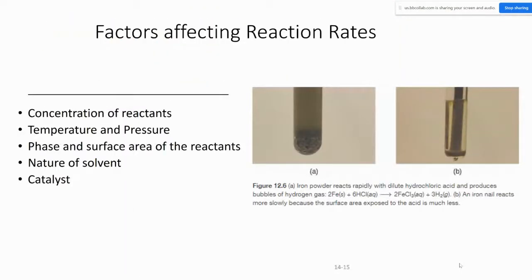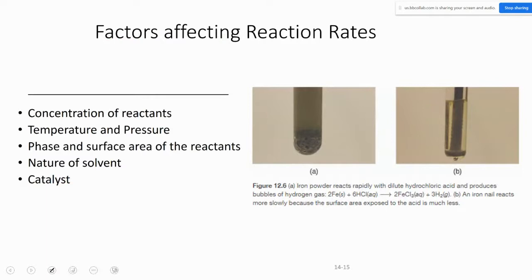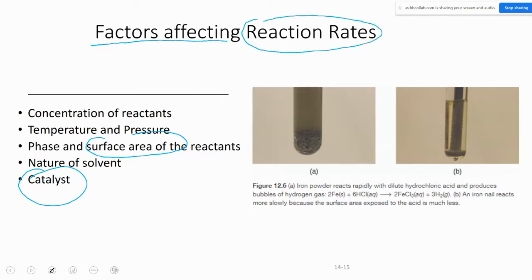Let's start where we left off last class. We spent about five to six minutes on factors that affect reaction rates: the concentration of reactants, the temperature and pressure in the reaction vessel, the surface area of the reactants, and the catalyst — how they affect the speed of a reaction. The reaction rate is defined as how the concentration of a reactant or product is changing over time: change in concentration over change in time.